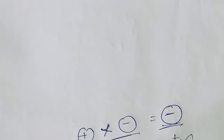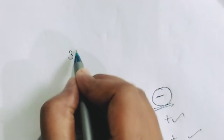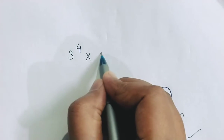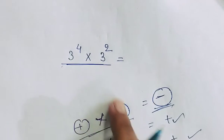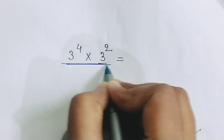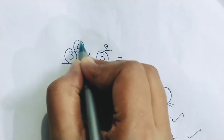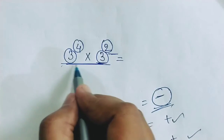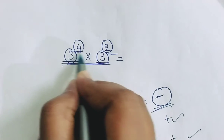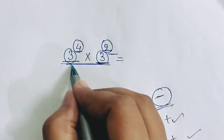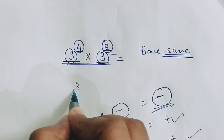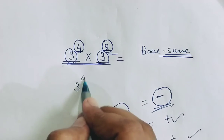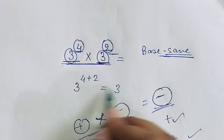In multiplication, the most important thing regarding exponents: if 3 has power 4 and it is to be multiplied with 3 to the power 2, since the base is the same, we simply write the base and add the powers. So 4 plus 2 gives us 3 to the power 6.